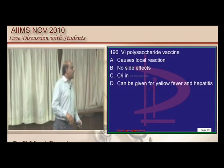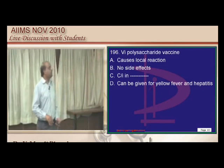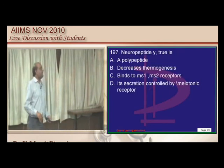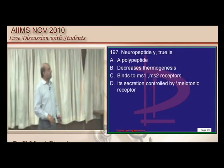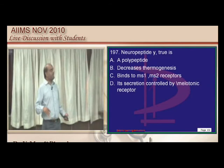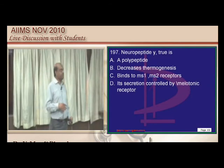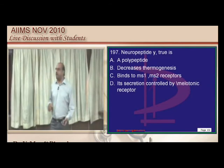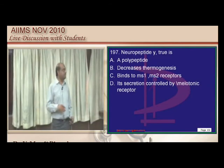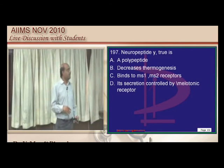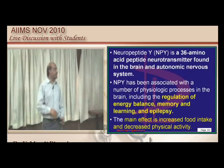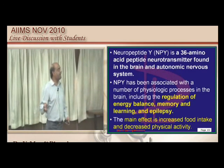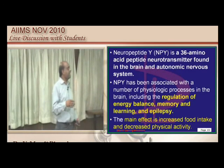Neuropeptide Y is a polypeptide produced in the brain and autonomic nervous system that regulates energy balance, memory, and learning.